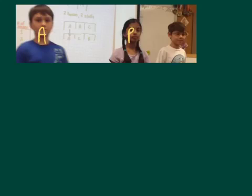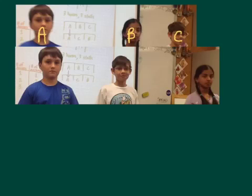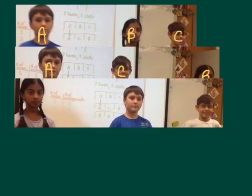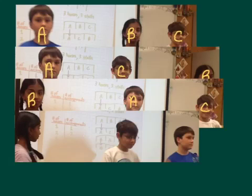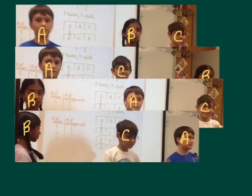Now let's verify by listing three-horse arrangements. Horse A in the first stall, horse B in the second, horse C in the third. Keep A in the first stall but switch B and C. Since there are no other arrangements with A first, move B to the first stall, put A in the second, keep C in the third. Then B stays in the first stall but the positions of A and C switch.